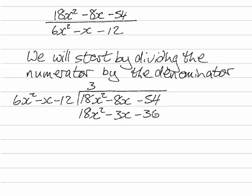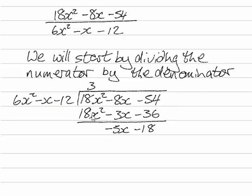We're now going to subtract this line from this line. So 18x squared minus 18x squared gives us nothing. Minus 8x minus minus 3x will leave us with minus 5x. And minus 54 minus minus 36 gives us minus 18.